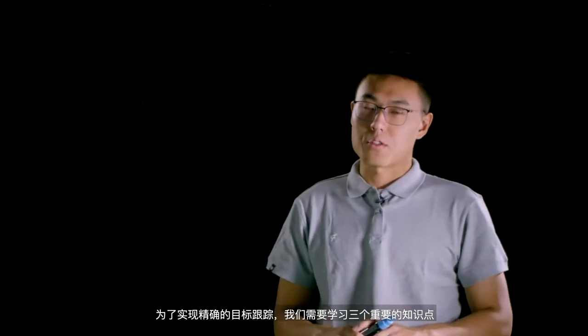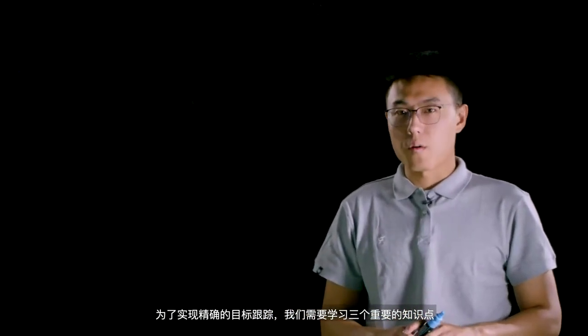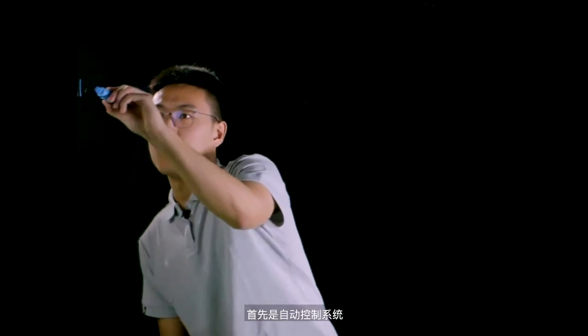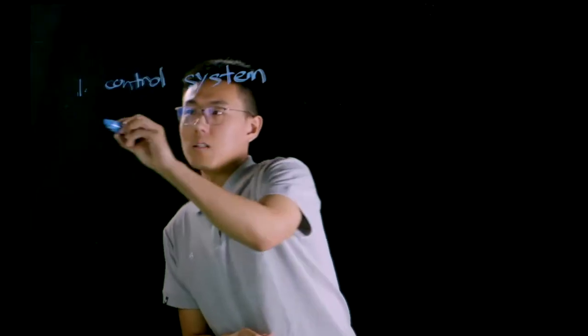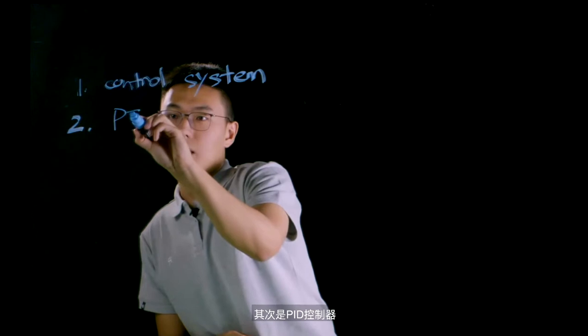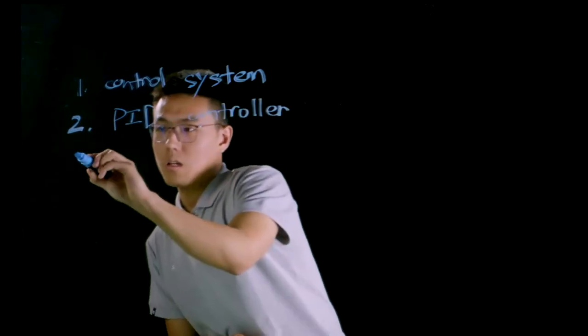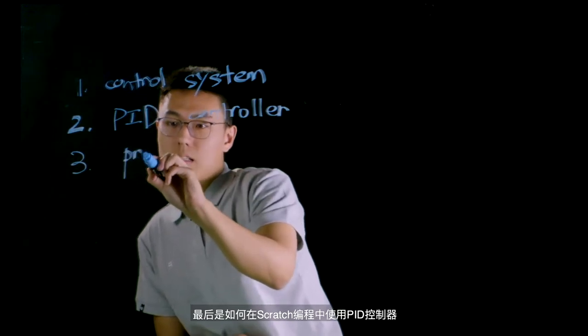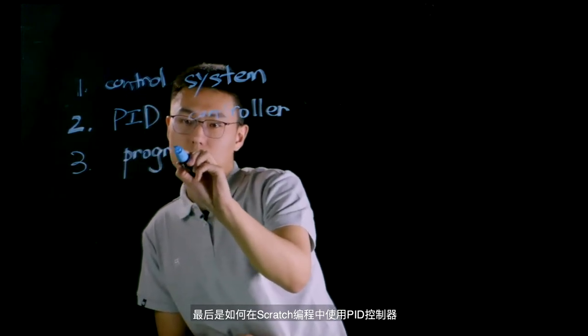To achieve accurate object tracking, we need to learn three important things. The first thing is automatic control system. The second thing is what is PID controller? And the last thing is how to implement the PID controller in Scratch programming.